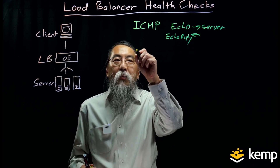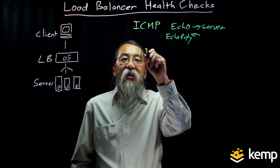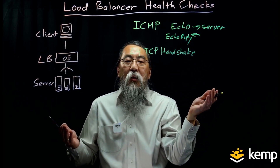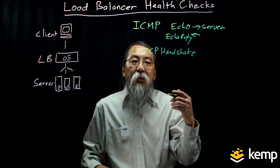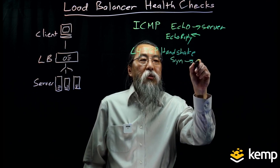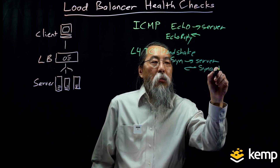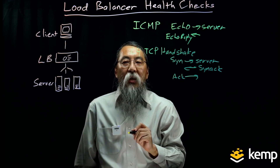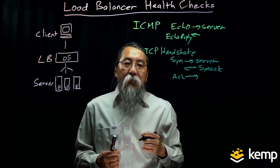The next thing the load balancer does is a layer four health check. It performs a TCP handshake — this three-way handshake goes to the specific TCP port, for HTTP usually port 80, to make sure the application server is listening on that port. The TCP handshake consists of a SYN to the server, the server responds with a SYN-ACK, and then the load balancer finishes the three-way handshake with an ACK. Now we know the application server is listening on that port and ready to accept connections.